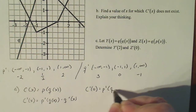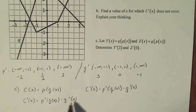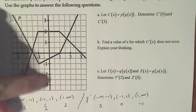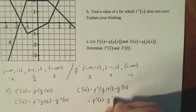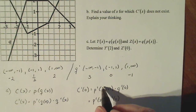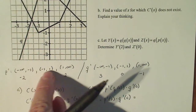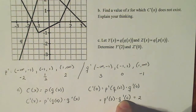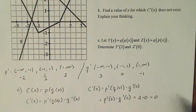Finding c prime of zero: it's p prime of q of zero times q prime of zero. Work your way from the inside out — q of zero, going to the chart, q of zero looks like the output is two. So this is p prime of two times q prime of zero. P prime at two: two falls in the interval from one to infinity, so the derivative is two. Q prime of zero: zero is in the interval minus one to one, so the derivative is zero. So that derivative turns out to be zero.